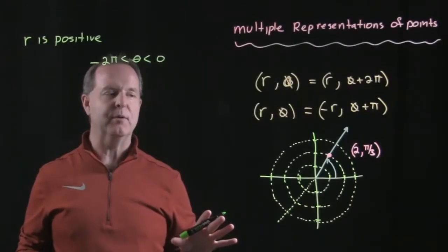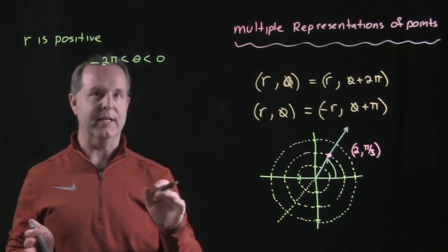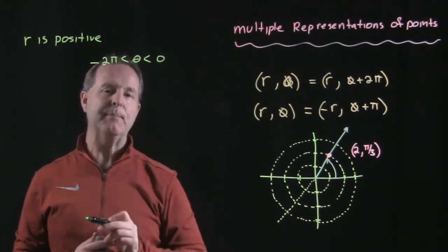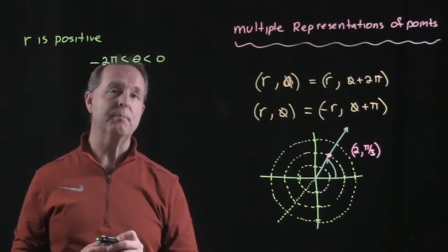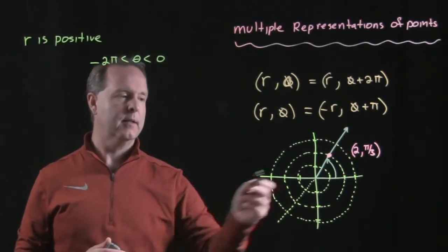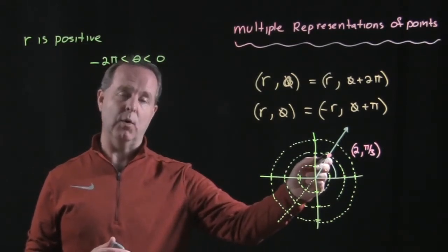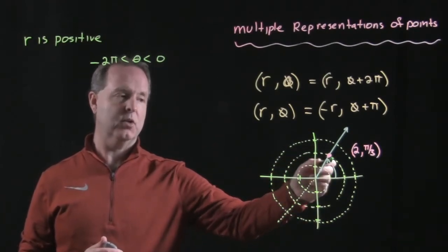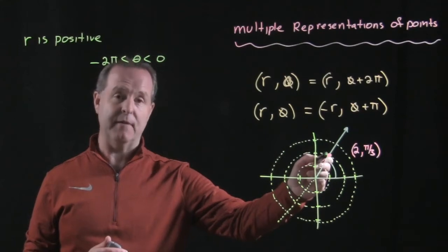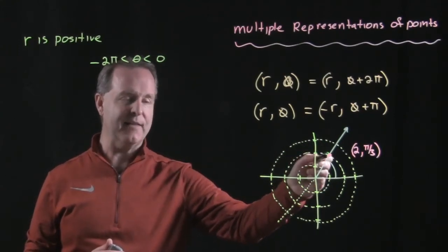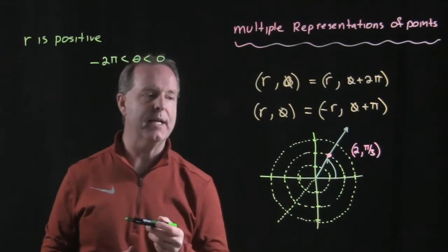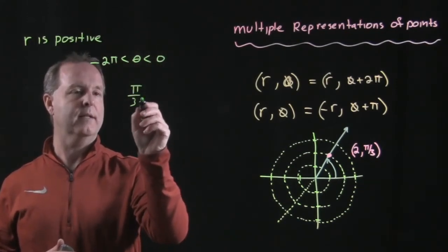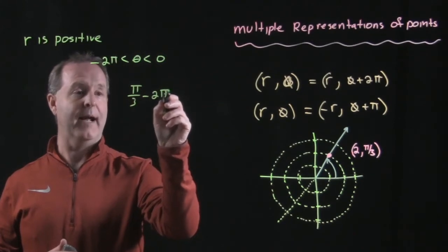One more example to get a sense of all the things we can do. Let's have r being positive, but our θ being negative, and specifically between -2π and 0. So here's my original point. In order to be negative, I need to rotate around clockwise. Let's subtract 2π from this position, because we know this point shows up exactly there every 2π rotations. So if I have π/3, which is my original point, and I subtract 2π from that,